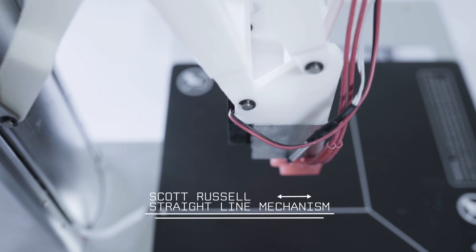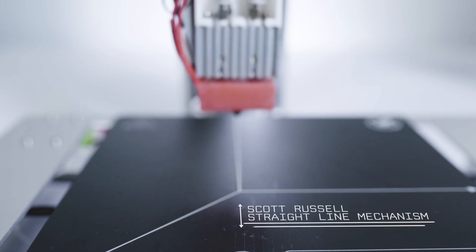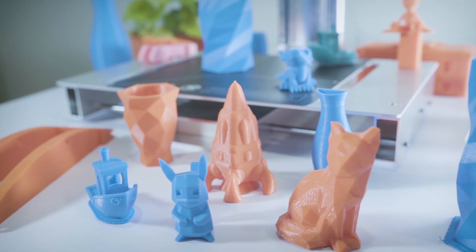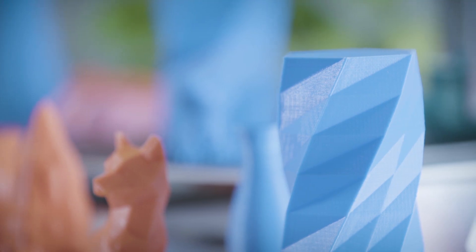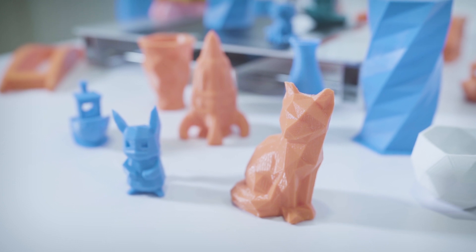Kappa is the world's first 3D printer utilizing the Scott Russell straight line mechanism. Used in pick-and-place robotics, this precision technology guarantees quality consistently.